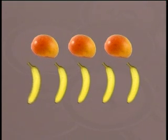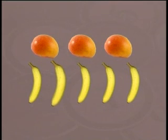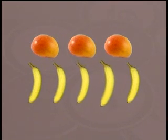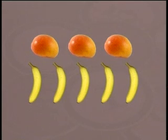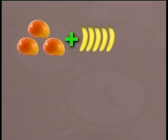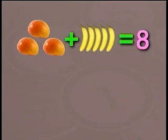And now the bananas. One, two, three, four, and five. Five bananas. So we have three mangoes and five bananas. That will give us a total of three plus five equals eight. There are eight fruits.